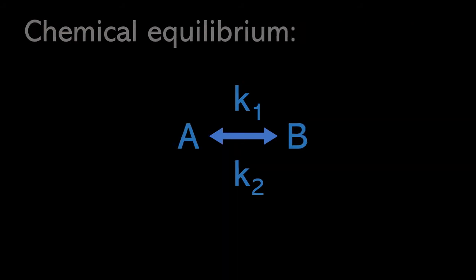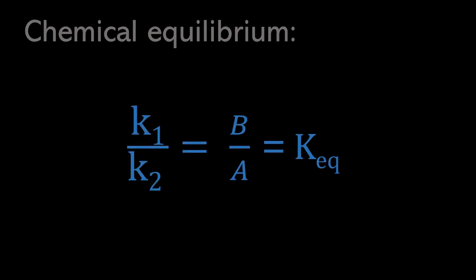For the remainder of the video I want to talk about chemical equilibrium. In principle, all biochemical reactions are reversible, though in reality we may see a unidirectional reaction. When you have a reversible reaction, it is possible to reach chemical equilibrium, which occurs when the forward and reverse reaction rates are equal. As a result, we can obtain the equilibrium constant K_EQ, which you arrive at by setting the forward reaction rate equal to the reverse reaction rate and rearranging to get the ratio of the forward rate constant to the reverse rate constant.